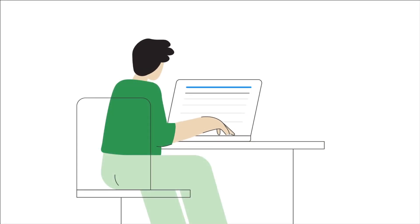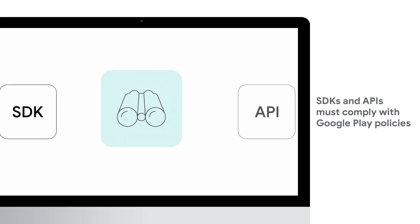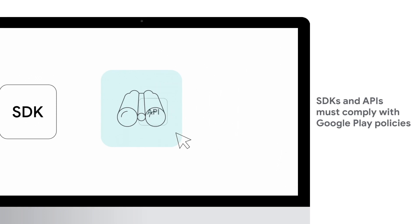SDKs help developers build apps quickly and efficiently and can add delightful features for users. When developing apps and games for Google Play, you're responsible for ensuring that every SDK and API used in your app complies with Google Play policies to help build a safe and high-quality experience for everyone.